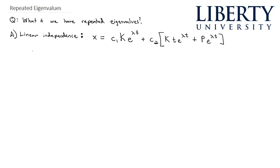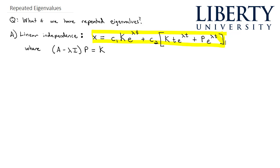The way we define that extra vector p is: (A minus lambda I) times p equals k. This is really similar to how we found k — to find k we set (A minus lambda I) times k equal to zero — so it's going to feel very similar to that process, then we plug everything into this solution form.